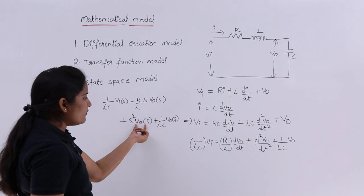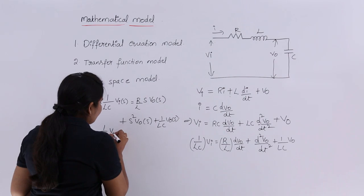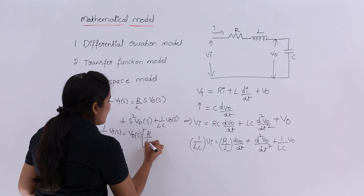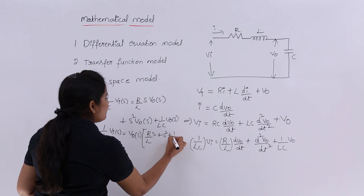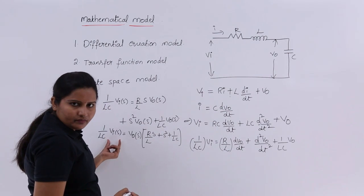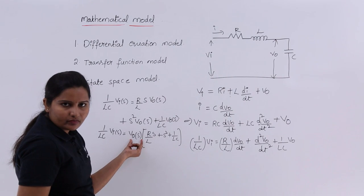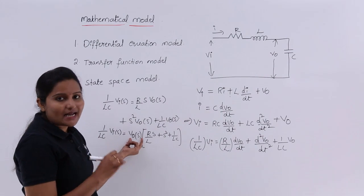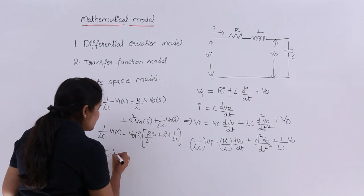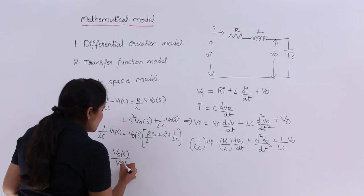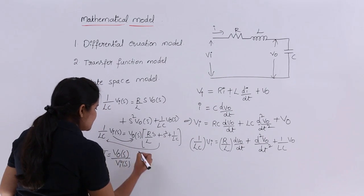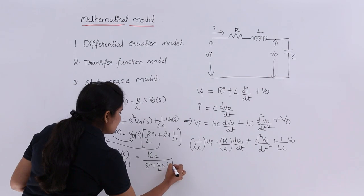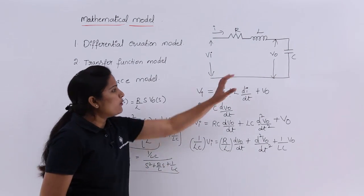Taking V_naught(S) common from the right side: (1/LC)·Vi(S) = V_naught(S)·[S² + (R/L)·S + 1/LC]. The transfer function is the output transform divided by the input transform, so: V_naught(S)/Vi(S) = (1/LC) / [S² + (R/L)·S + 1/LC]. This is the transfer function model of the system.